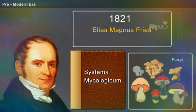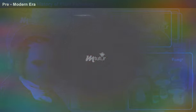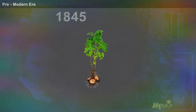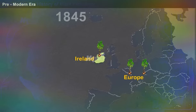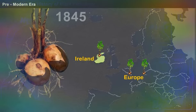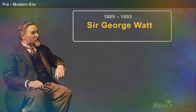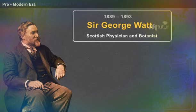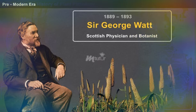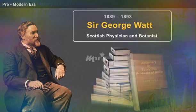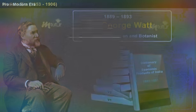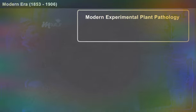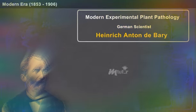In 1845, the late blight disease devastated the potato crops in Ireland and other parts of Europe, which prompted mycologists and plant pathologists to conduct a study on plant diseases of potato. During 1889 to 1893, Sir George Watt, a Scottish physician and botanist, gave a detailed description of disorders of crops in his nine-volume book Dictionary of Economic Products of India.